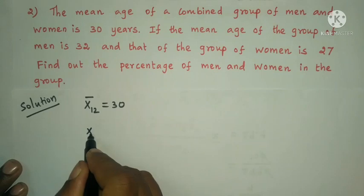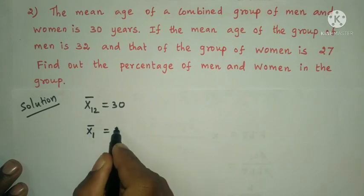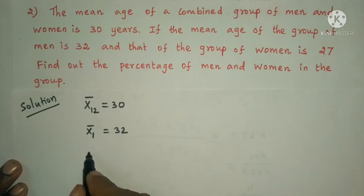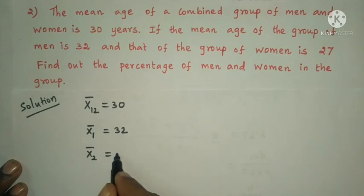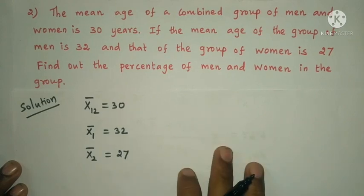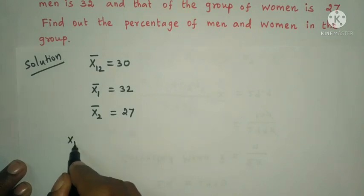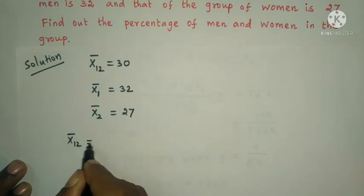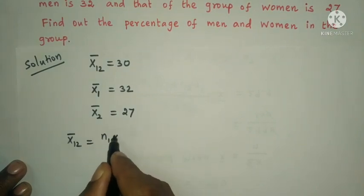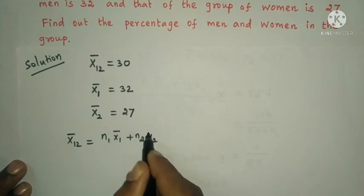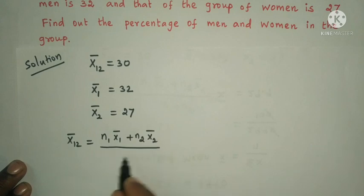Men's group mean age x̄₁ = 32. Women's group mean age x̄₂ = 27. The combined mean formula is: x̄₁₂ = (n₁·x̄₁ + n₂·x̄₂) / (n₁ + n₂).